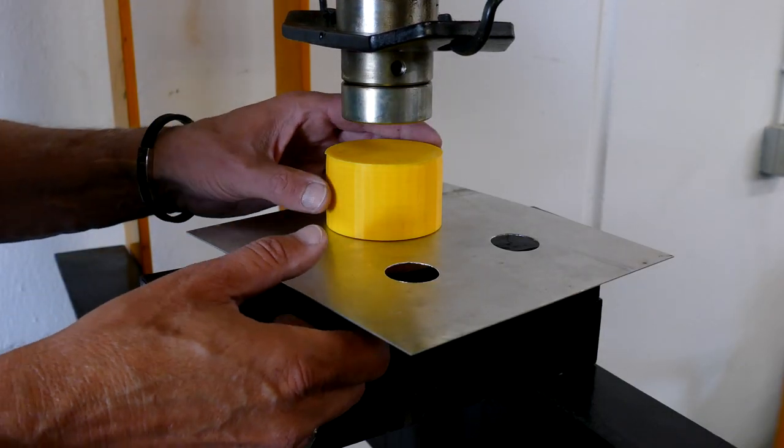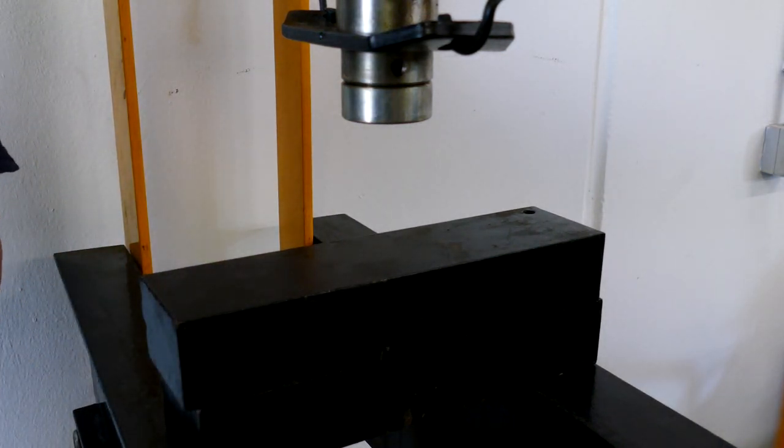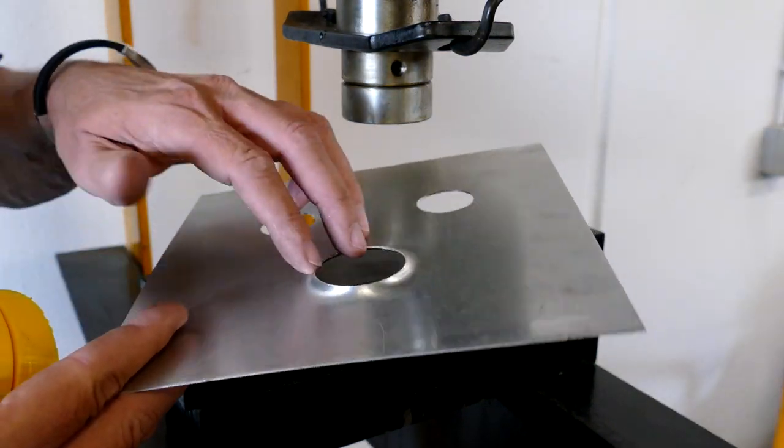The dimple die is fit together perfectly and presses the sheet metal into the negative shape. When opening the dimple die, you can see the perfectly shaped bead with a rounded edge.